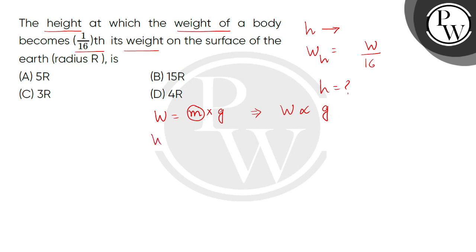So it means weight at height h divided by the weight on the surface of earth is same as the ratio of gravity at height h to the gravity on the surface, which we express R squared divided by R plus h bracket square.